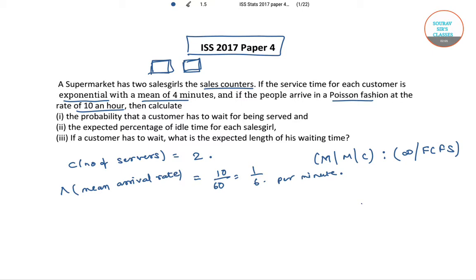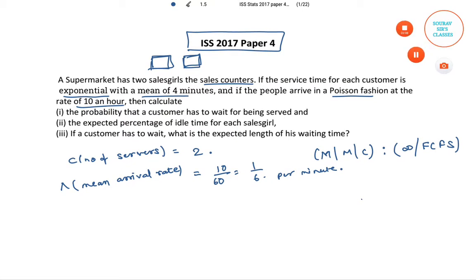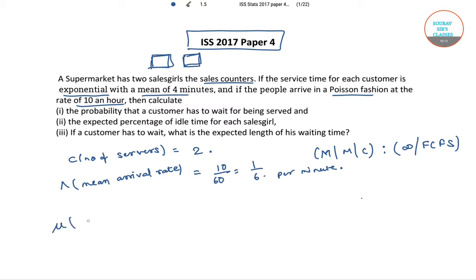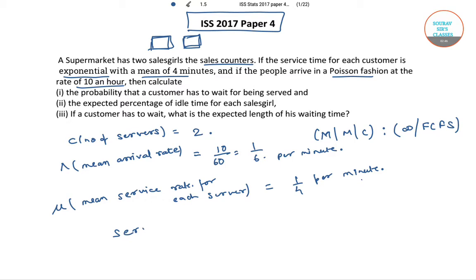Next, mu, that is the mean service rate for each server — this mu is equals to 1 by 4 per minute. Since C, the number of servers, is equals to 2, the overall service rate equals C times mu, which is 2 into 1 by 4, which is equals to 1 by 2 per minute.